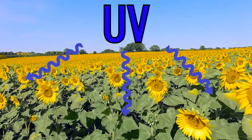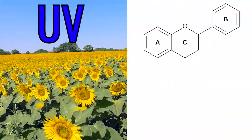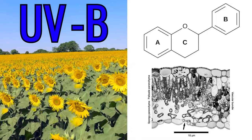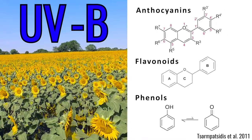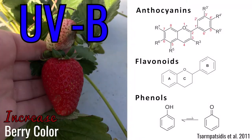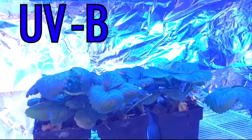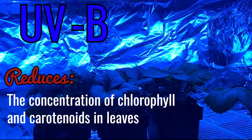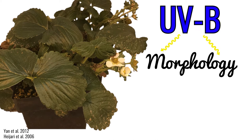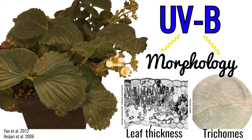Exposure to natural UV affects plant chemistry and morphology. The presence of UVB can trigger the production of anthocyanins, flavonoids, and phenols in some plants, and for strawberry, this can increase berry color and decrease firmness. Exposure to UVB can also reduce the concentration of chlorophyll and carotenoids in leaves. The morphology of plants can also be influenced by exposure to UV, including increased leaf thickness and formation of trichomes.